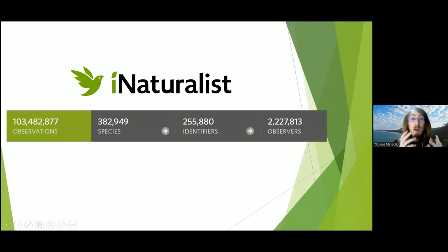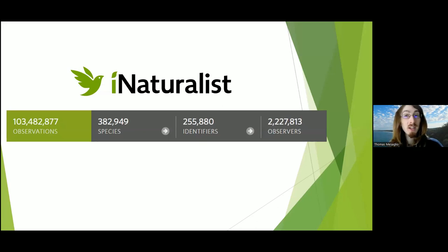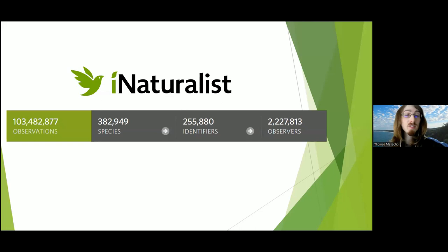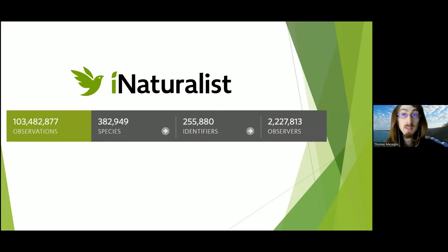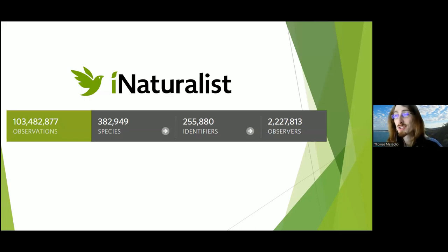To give a brief insight into iNaturalist's incredible scale: just a couple of weeks ago it hit 100 million observations submitted to the platform. These cover almost 400,000 different species, observed by more than 2.2 million observers. Over the past five years in particular, iNaturalist has seen incredible exponential growth in all of these metrics. There is certainly no better time to jump on board if you haven't already.